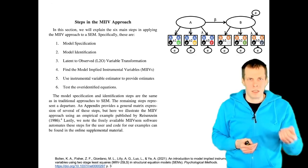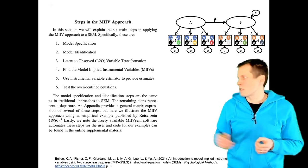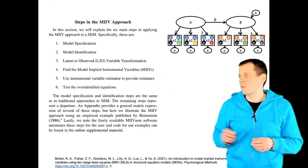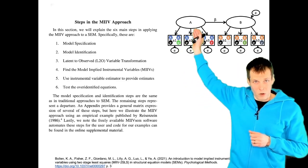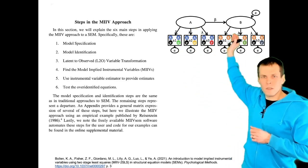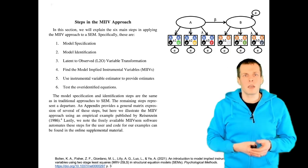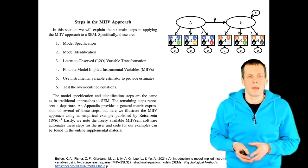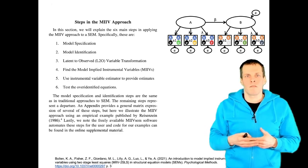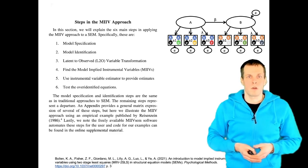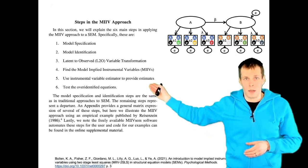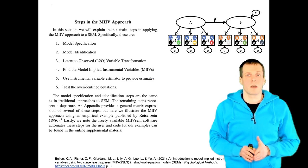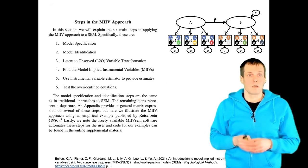Then there are three steps unique to model-implied instrumental variable estimation. Step three is the latent-to-observed transformation: you take some observed variables and use them as proxies for the latent variables. That produces inconsistent estimates in regression, but you can use instrumental variable estimation. If you use the A1 indicator as a proxy for factor A and B1 as a proxy for factor B, you can use the remaining indicators or a subset of them as instrumental variables. Then you do IV estimation like two-stage least squares, which gives estimates, and you can apply instrumental variable diagnostics — particularly the exclusion criterion — to test the model.